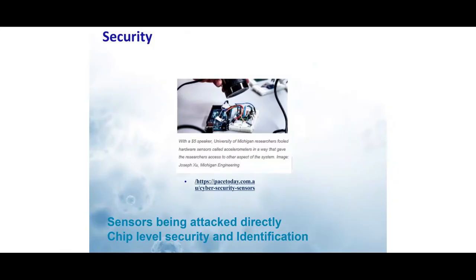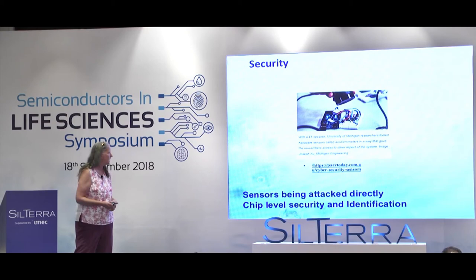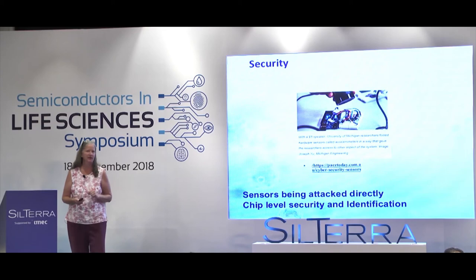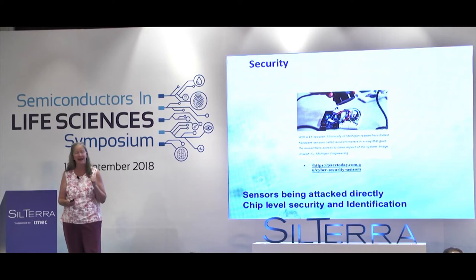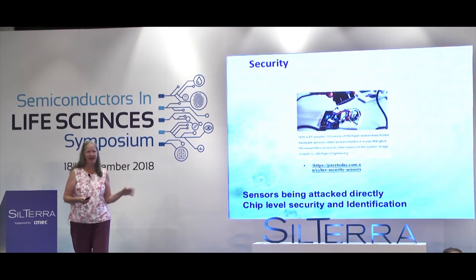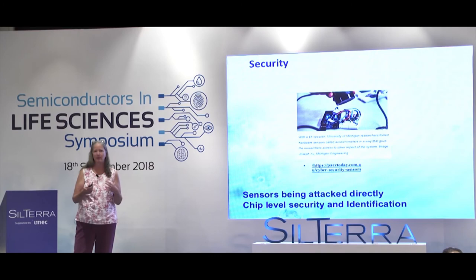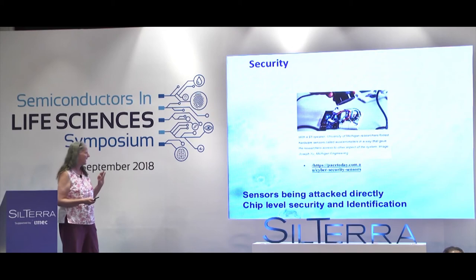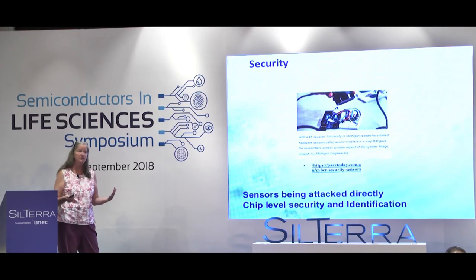We also have to talk about security, which we wish we didn't have to. A well-known example shows an accelerometer being manipulated by an ultrasound signal — the output of the sensor was changed by spoofing it. The question is how we protect our biochips so people can't attack them at the sensor level. Instead of denial-of-service attacks on the internet, attackers are going after our sensors, so we must secure them and build in chip-level security and identification features — an additional design complexity we must solve.